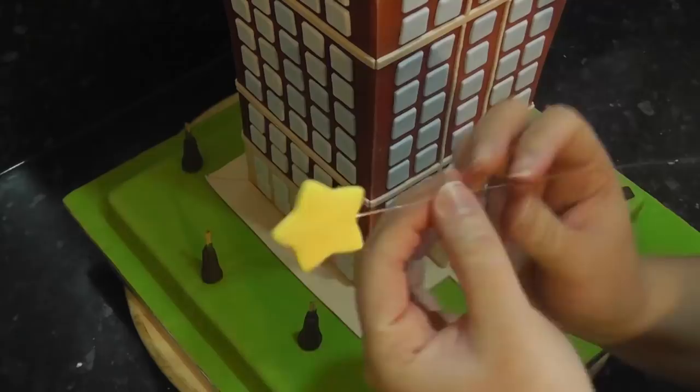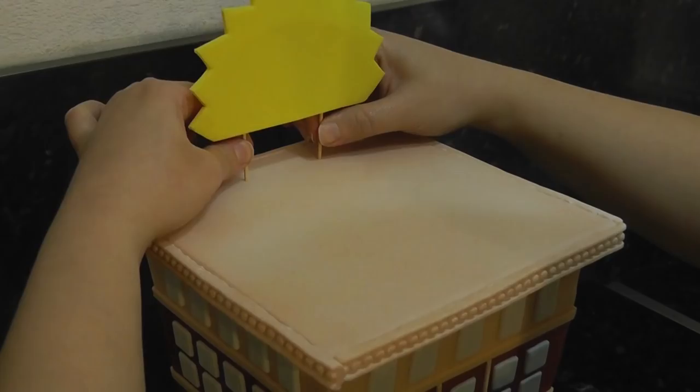Cut out your sunburst and stick it onto your foam core. Insert two cocktail sticks to the base. Attach this to the top of the building.